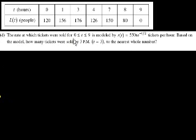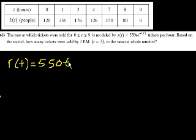The rate at which tickets were sold over this range is modeled by r(t). Let me write that in case you can't see it. This is the rate at which tickets were sold: r(t) equals 550t times e to the minus t over 2, tickets per hour. Based on the model,